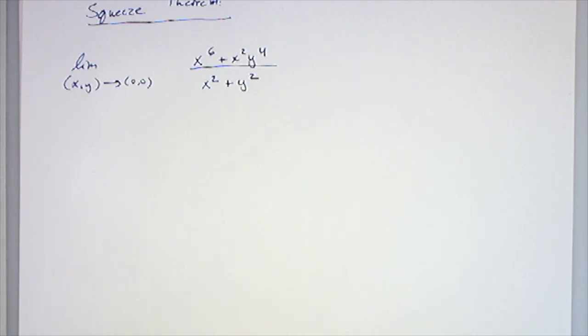Clearly it's a 0 over 0 type of limit, and if you try a bunch of different paths, you're going to keep getting 0, right?